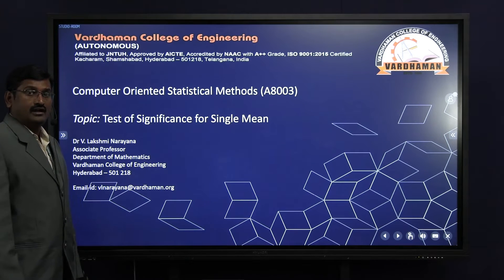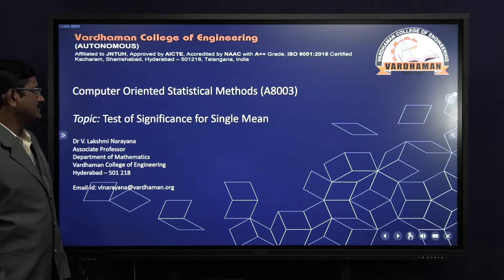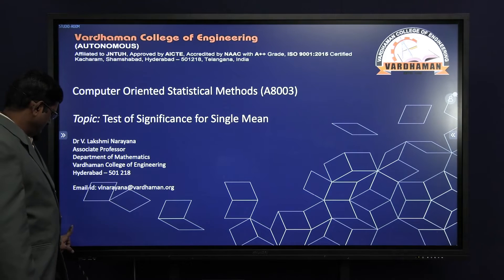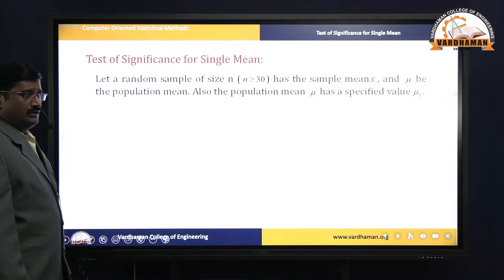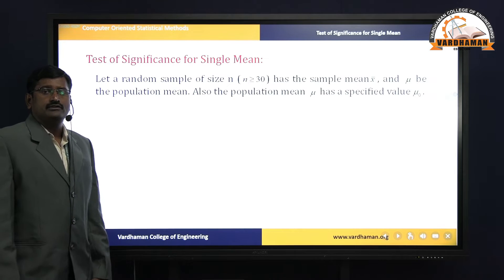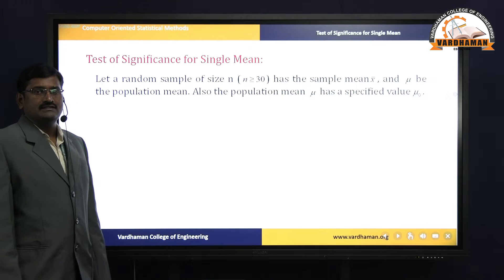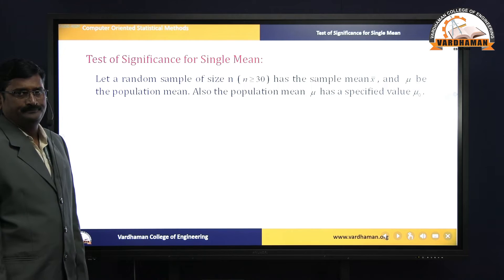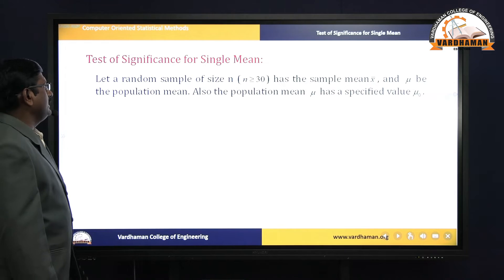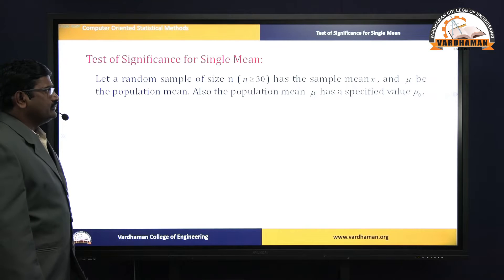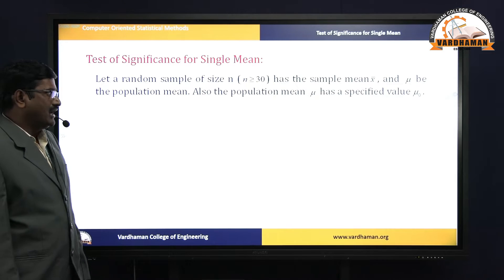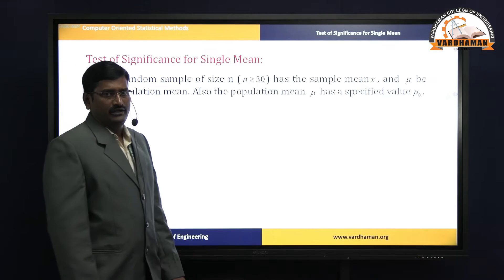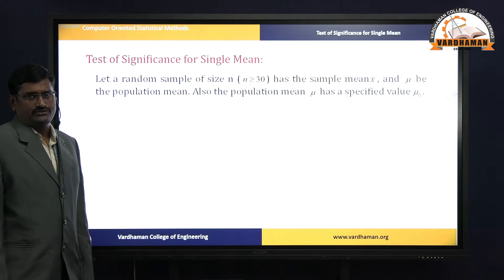In this video I am going to discuss the test of significance for single mean for large sample test. To apply large sample methods, the condition is that sample size n should be greater than or equal to 30. Particularly in single mean, we are going to use sample mean x-bar, population mean mu, and the specified value mu-naught.